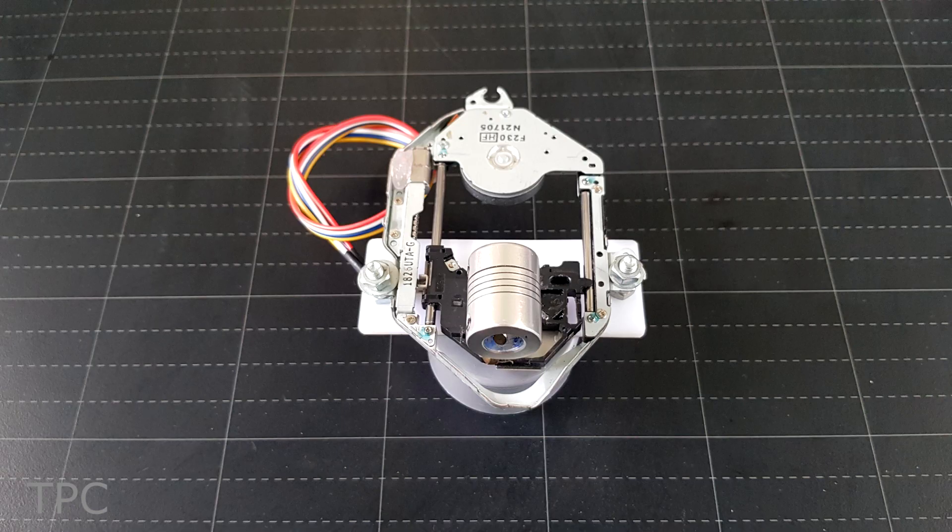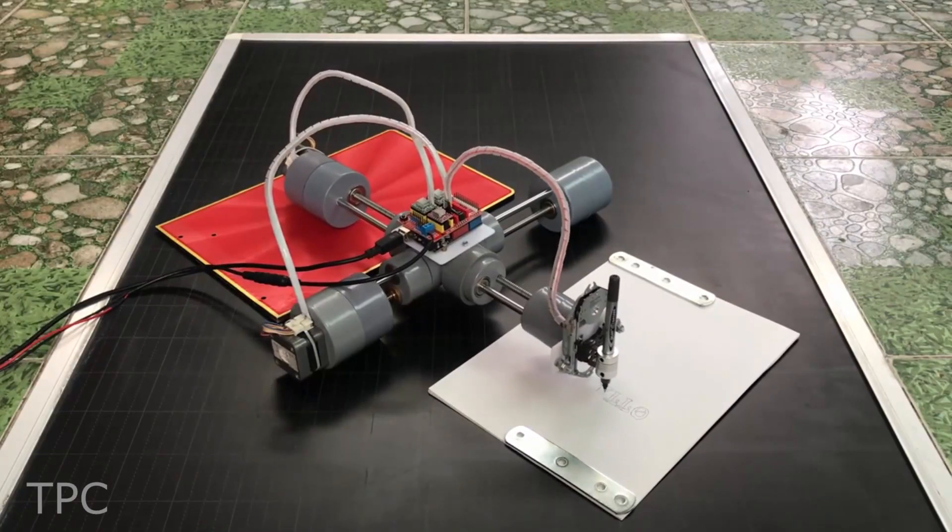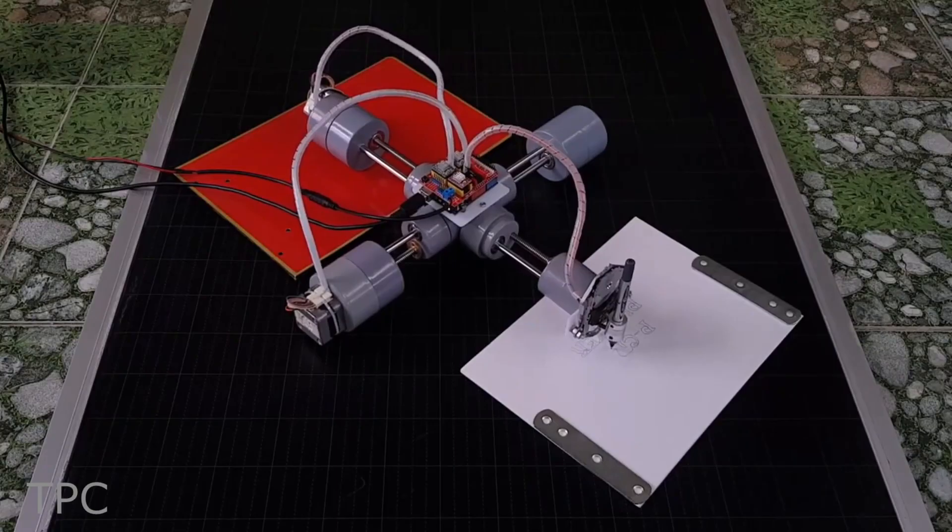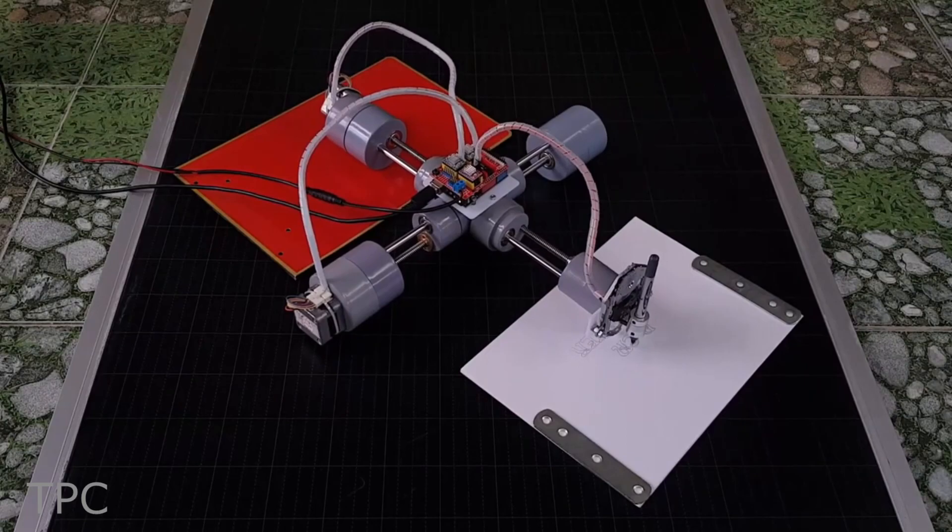A central PVC assembly holds both the threaded and smooth rods for both the X and Y axes. The Z-axis is made from a linear gliding mechanism from a CD player that allows the pen to move with great precision. A set of three A4988 stepper motor driver modules provide the current to both the NEMA 17 motors and CD drive components.